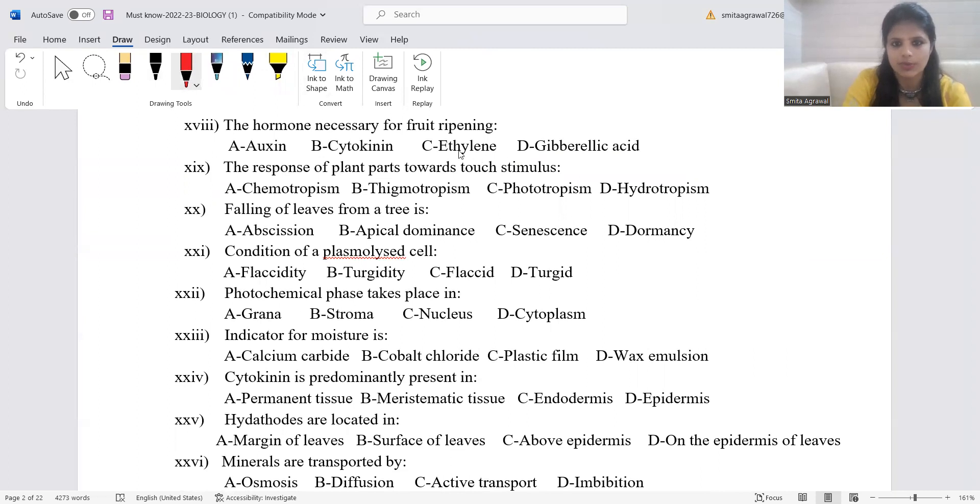The hormone responsible for fruit ripening is ethylene. Ethylene is the only hormone that is a gaseous hormone. The response of plant parts towards touch stimulus is thigmotropism. Falling of leaves from a tree is abscission. Condition of a plasmolyzed cell: flaccid. Process of photochemical phase: grana. Stroma is for dark phase. Nucleus and cytoplasm are not phases.